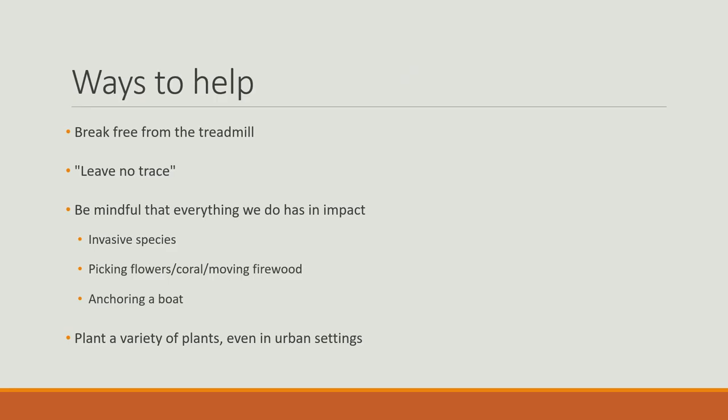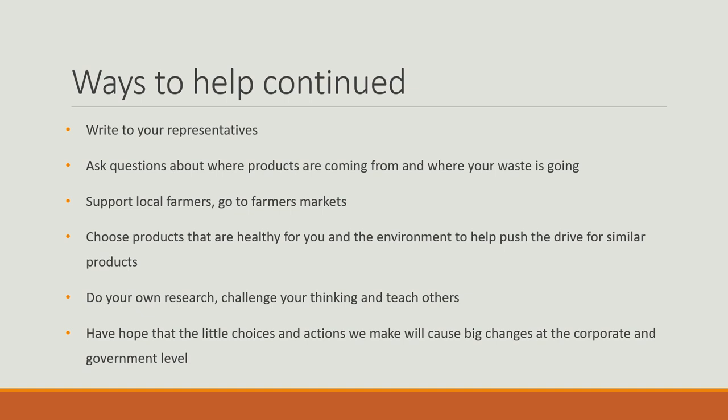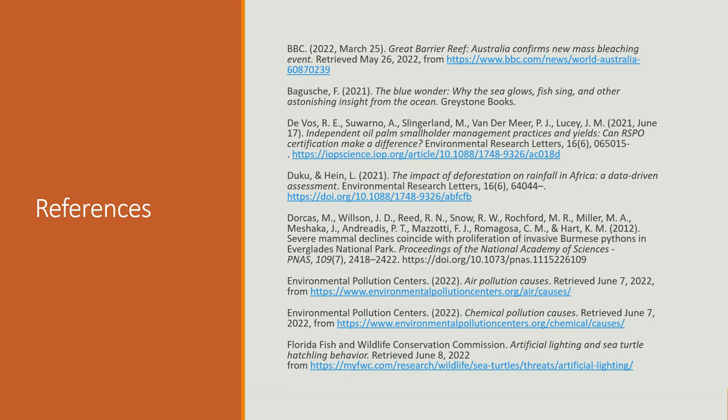Some ways we can help our ecosystem: break free from the treadmill. We should leave no trace and be mindful that everything we do has an impact. Be mindful of invasive species, picking flowers, coral, moving firewood, and anchoring a boat. Plant a variety of plants, even in urban settings. Write to your representatives. Ask more questions about where our products come from and where our waste goes. Support local farmers and go to farmers markets. Choose products that are healthy for you and the environment. Do your own research, challenge your thinking, and teach others. Have hope that the little choices and actions we make will cause big changes.